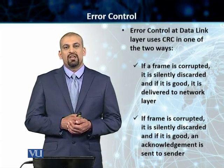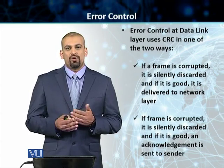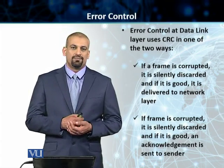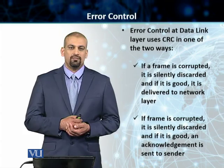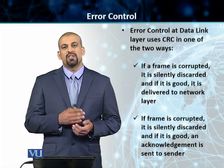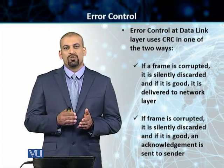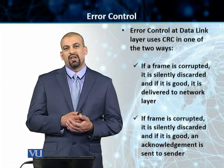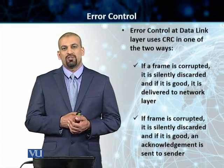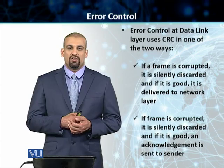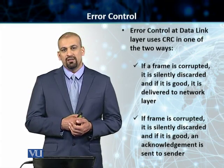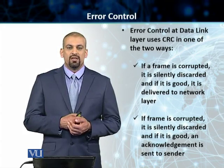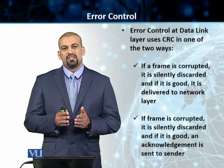In the case of CRC, there can be two scenarios when sending frames from one end to the other. The first scenario is that if the data is good, it is passed on to the higher layer — in this case, the data link layer passes it on to layer 3. And if the data is bad or corrupted, the data is discarded silently.